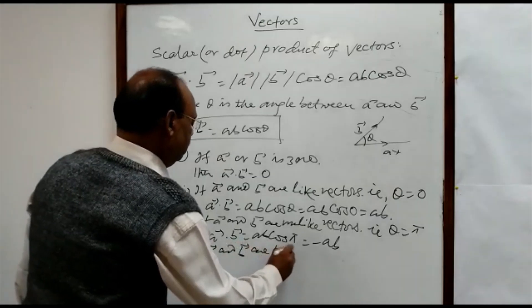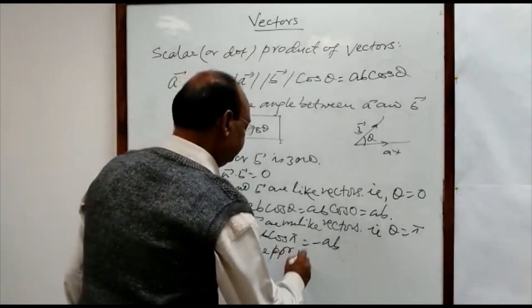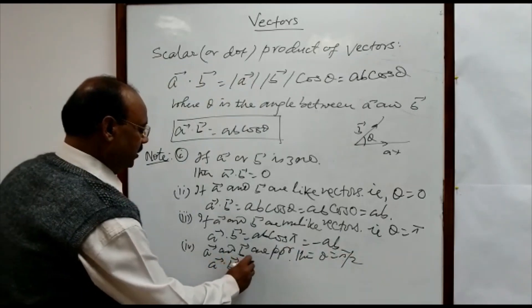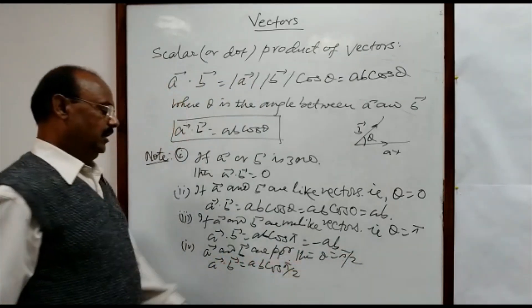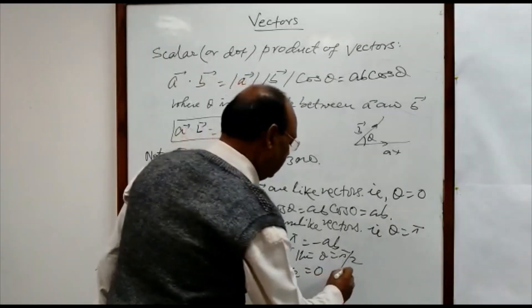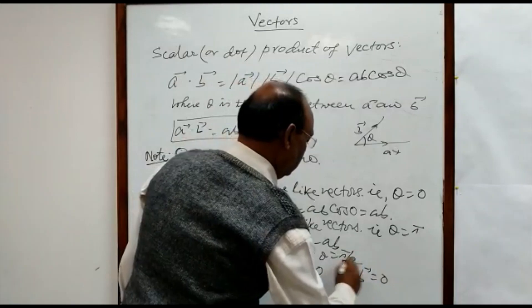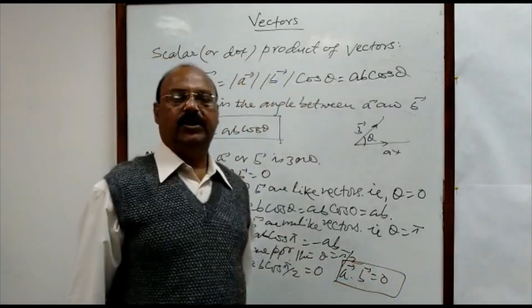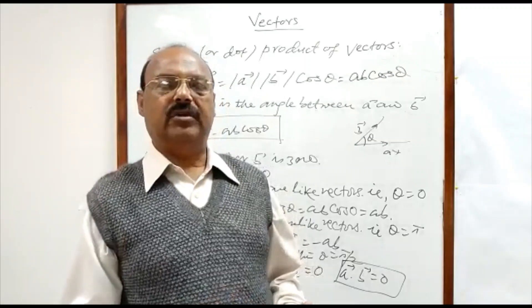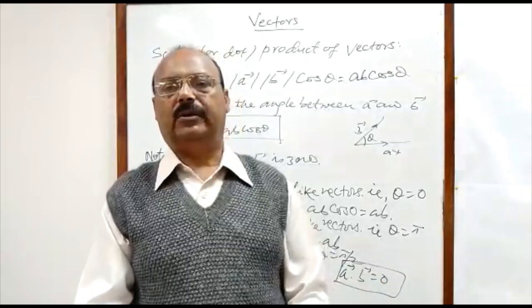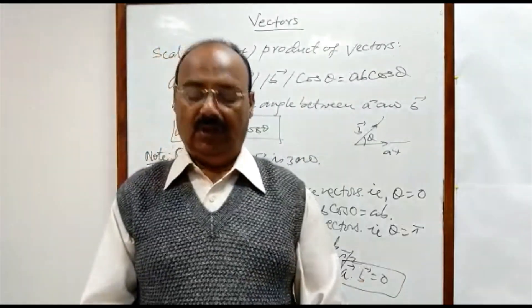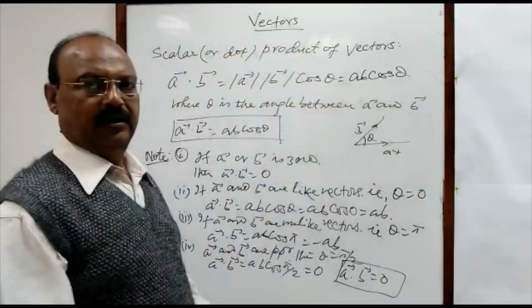The fourth case: when vectors a and b are perpendicular to each other, theta is pi by two. So a dot b equals ab cos(pi/2), and cos(pi/2) is zero, so the result is simply zero. We can use this result to show that two vectors are perpendicular — we find their dot product, and if it equals zero, it is proved that the two given vectors are perpendicular to each other.